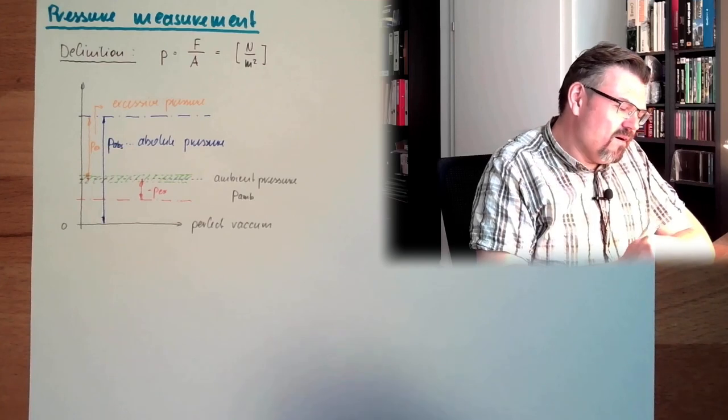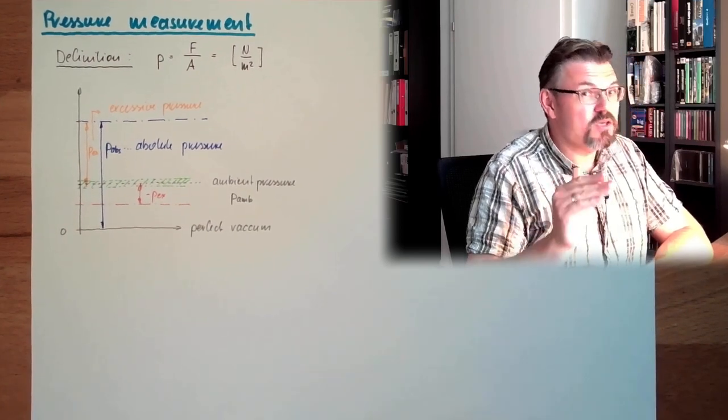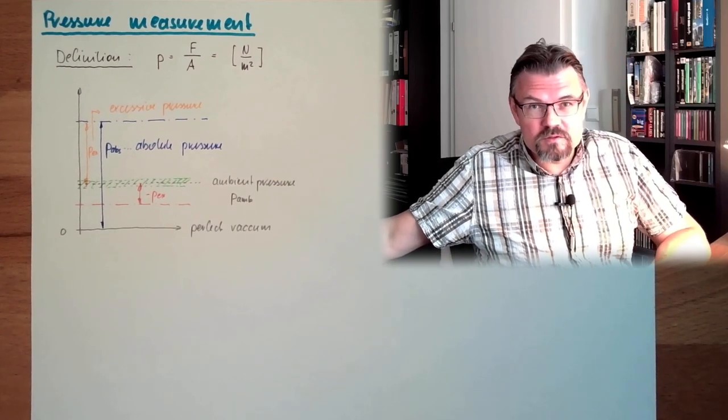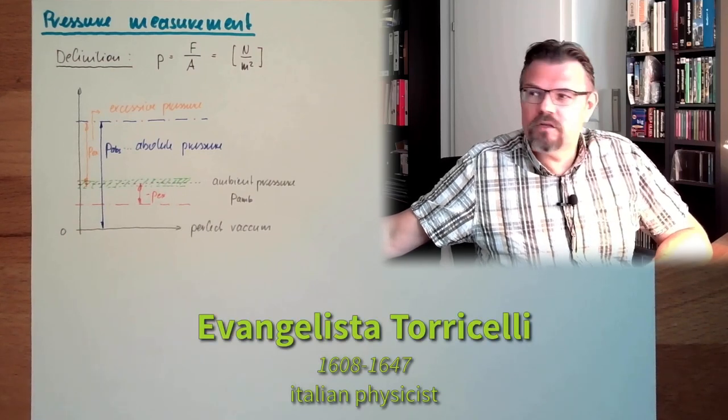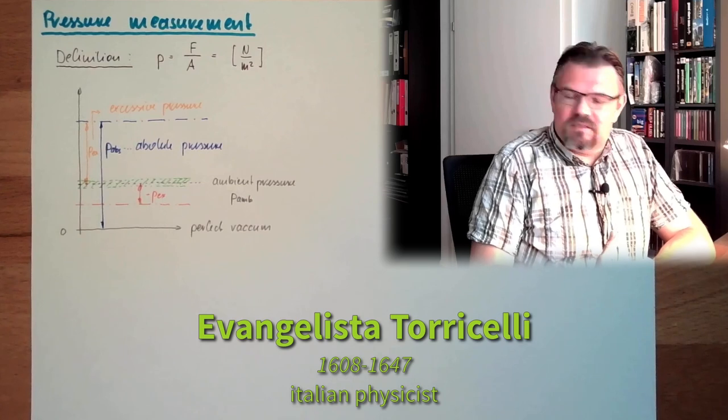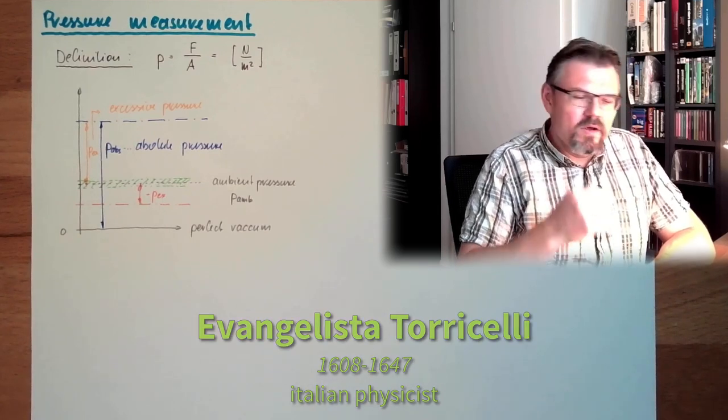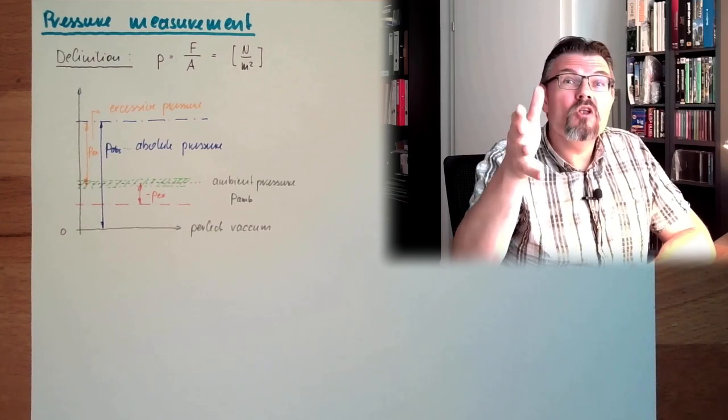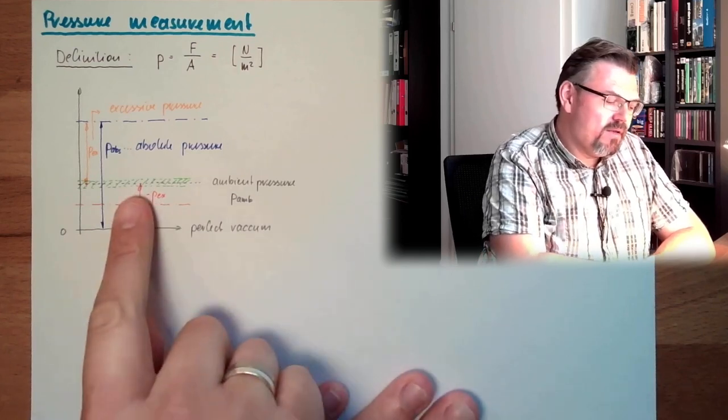Because pressure is widely used, and pressure is often used, and pressure was measured a long time ago. One of the first persons who measured pressure was Evangelista Torricelli. He was an Italian scientist who in 1633, a long history of measurement, he tried to determine this ambient pressure.